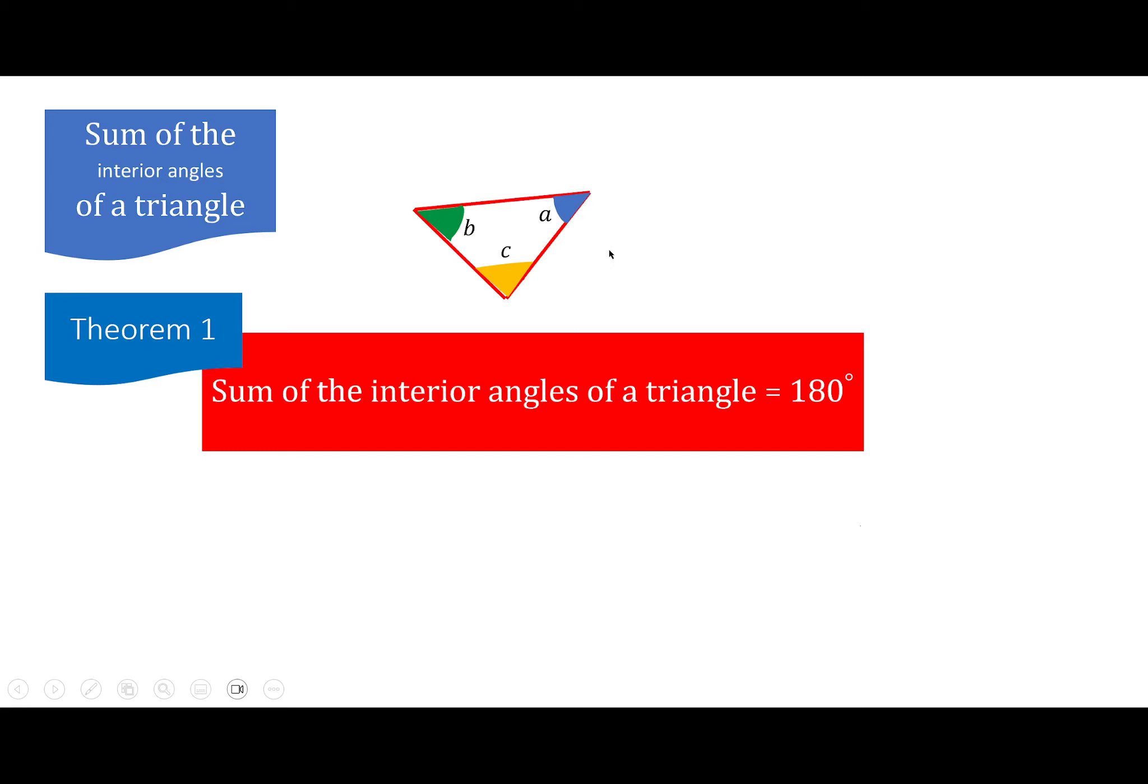Remember this number: 180 degrees. So if you cut this from here, from here, from here, and rearrange them here, you find out that they make a straight line. And a straight line means 180 degrees. You can try it on your own to see it. This way you can remember the theorem. The sum of the three interior angles is equal to 180 degrees.